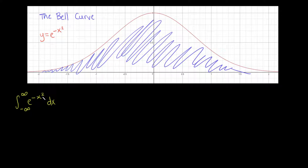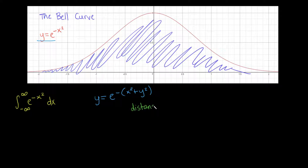What I want to do is show you a super clever foray into multivariable calculus that will tame this beast of an integral. We're going to extend this one-dimensional bell curve into two dimensions: e to the negative x squared plus y squared. You might notice x squared plus y squared is the same as distance squared away from the origin, which is going to be quite useful in a minute.